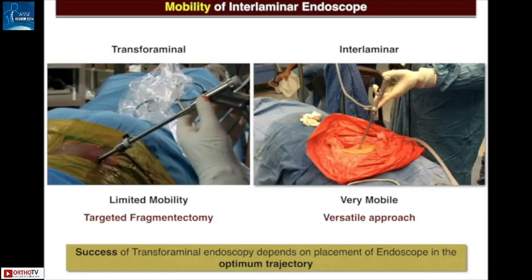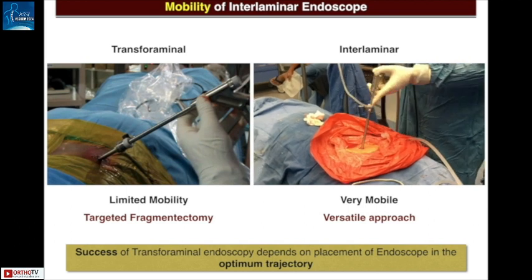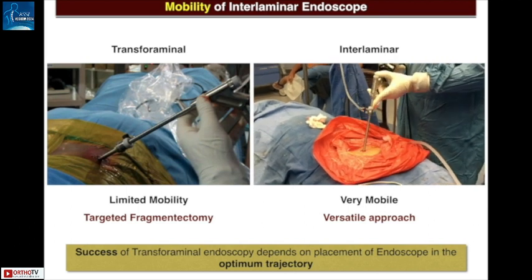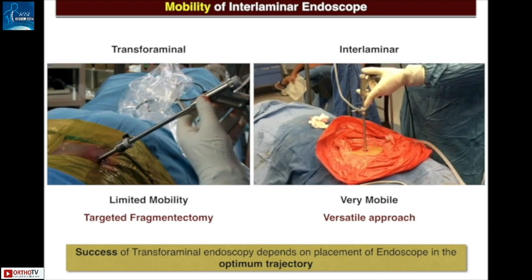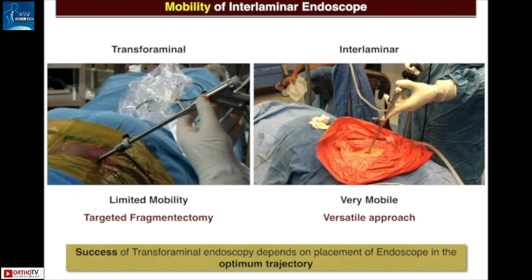Transforaminal endoscopy has very limited mobility as compared to interlaminar endoscopy. This is because of the narrow intervertebral foramen and the working cannula, which is anchored inside the annulus. With interlaminar endoscopy, on the other hand, the working cannula is freely floating in the epidural space, and the endoscope can be angulated, tilted, and rotated in any direction to look into every nook and corner of the spinal canal.